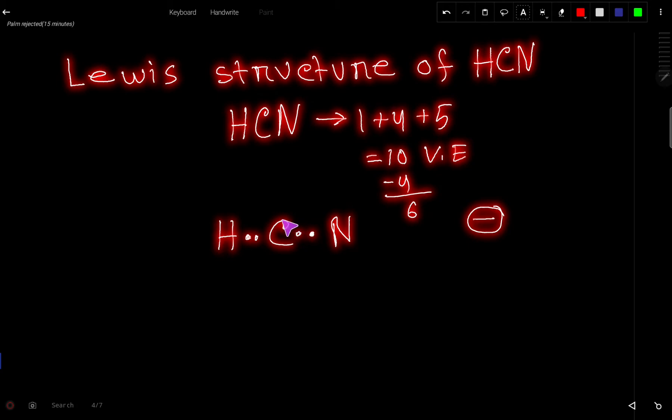Here carbon is the central atom because it has the highest power of making more bonds, or carbon is the central atom because it is least electronegative. Hydrogen is always considered the outer atom.